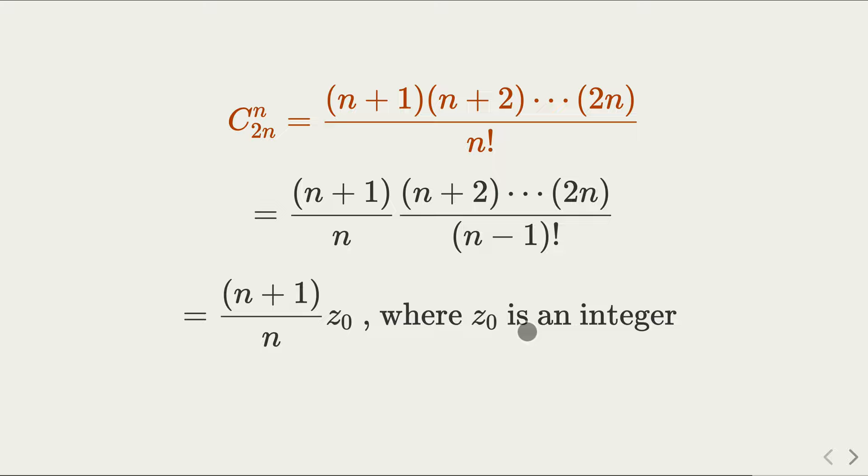Now, notice that the whole thing is still an integer, because 2n choose n, by earlier analysis, is an integer. So what do we get? We get the whole thing is an integer, but here n plus 1 and n are relatively prime. Two consecutive numbers are always relatively prime. There's no common prime factor. So, which means in order for the whole thing to be an integer, n must be a divisor of z naught.